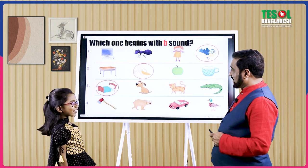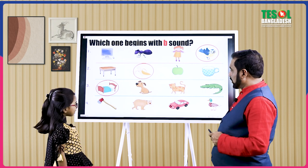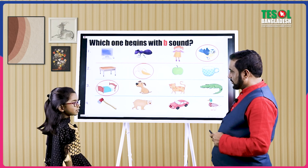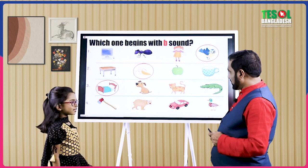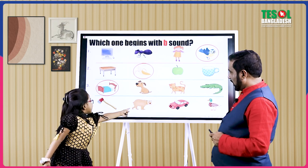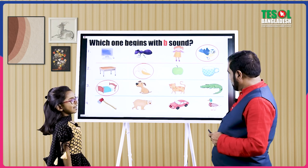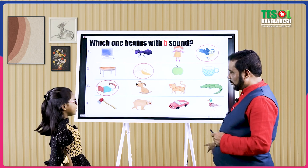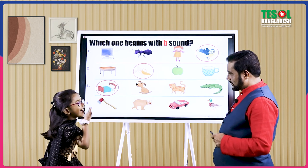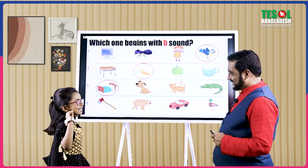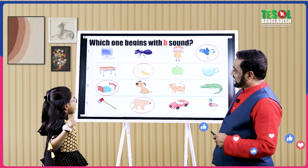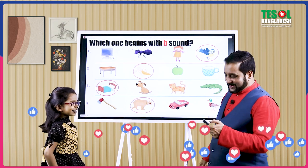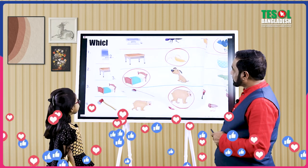And the last one. Which one begins with B sound? Bear. Where is bear? Which one is the bear? I think this one is the bear. No — what is that then? Duck. Quack quack. So bear is the right one. Cool, very great. Let's move on.